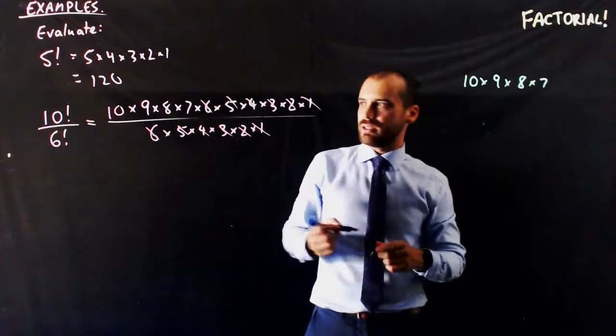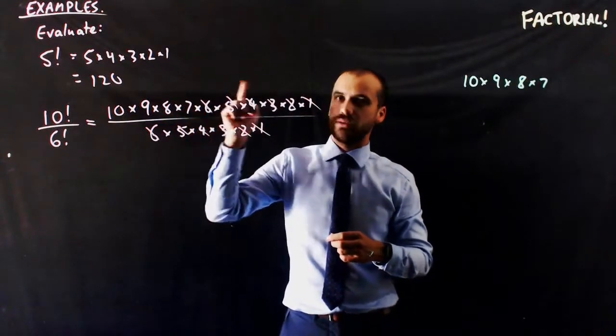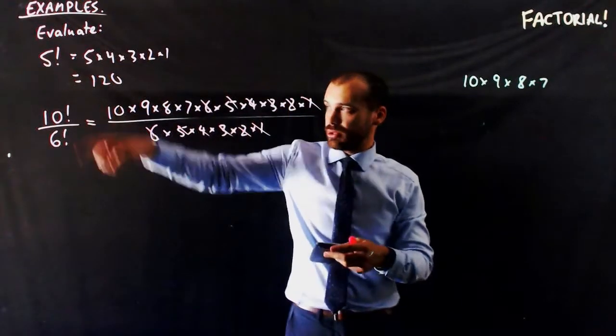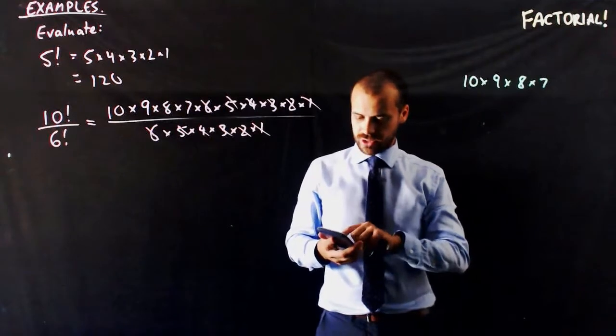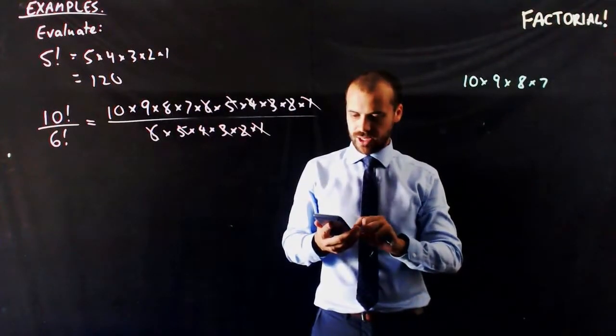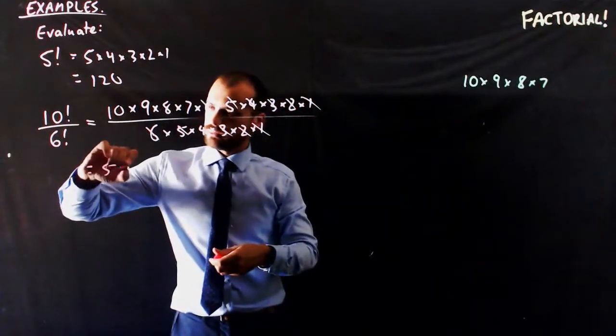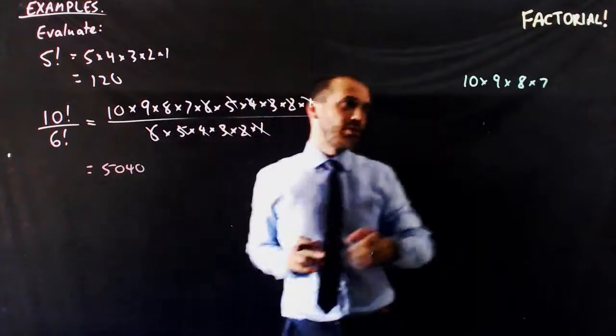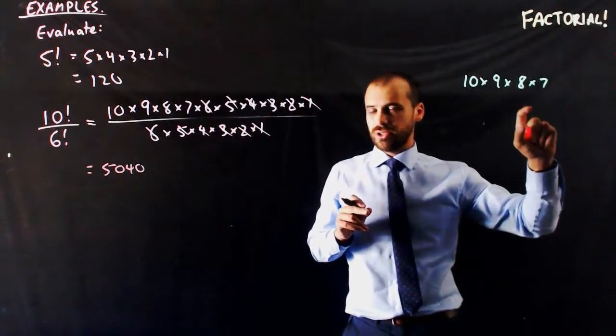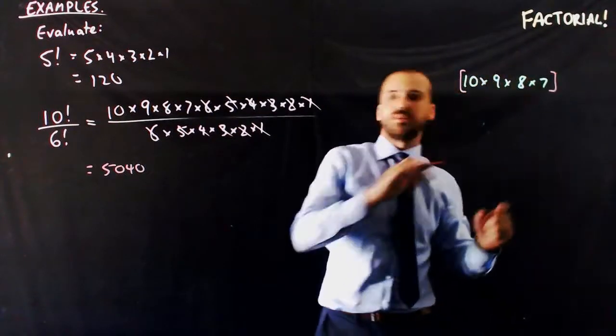And what I get is 10 factorial over 6 factorial, which is 10 times 9 times 8 times 7. Now, typing that into your calculator is as simple as typing 10 factorial divided by 6 factorial. So, bottom line, if you want to do something like that on your calculator, you can type that in like that.